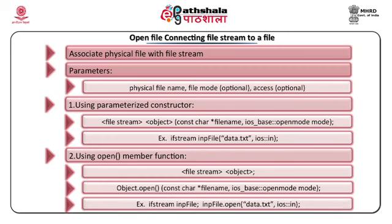As shown in the previous slide, we can use a two- or three-parameter constructor to create the file instance and connect it to the physical file in a single statement. We can also use the open() member function, but when using it, the file stream object must have been created in advance. Therefore it requires first creating the instance and then connecting it to the file stream using object.open(filename, mode).